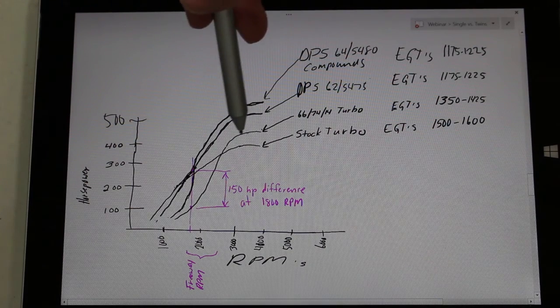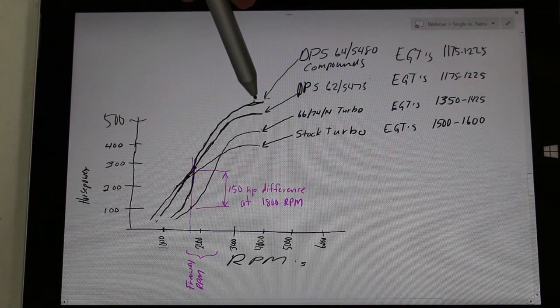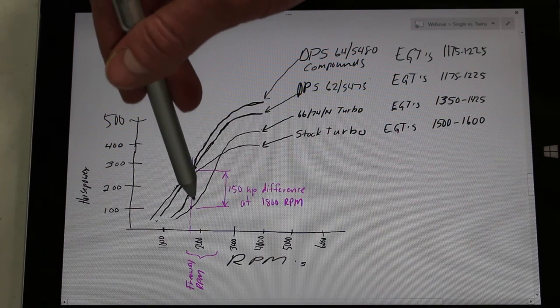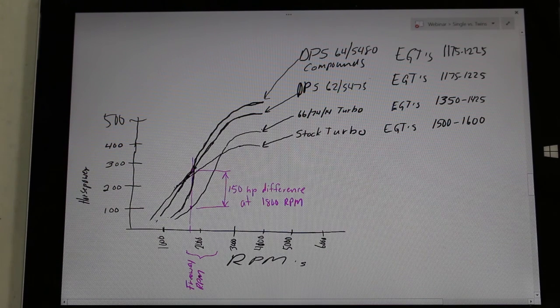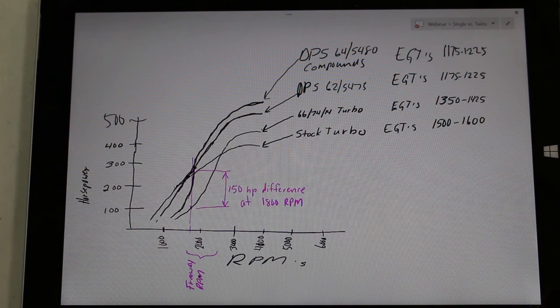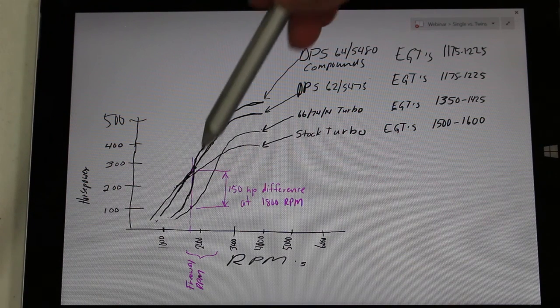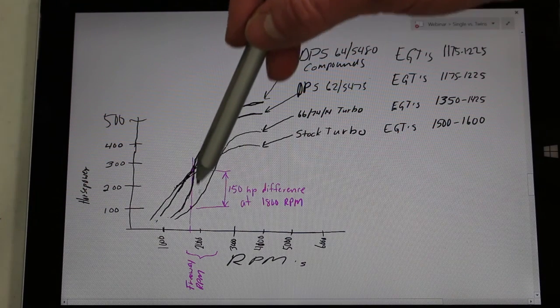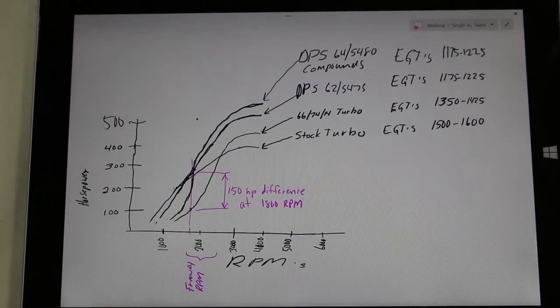So look at the difference in horsepower between any one of our kits at 1800 RPMs. Because 1800 RPMs in that realm is where you're going to be driving on the freeway. At those usable, really usable RPM levels are literally going to monkey stomp those huge 66 type turbos that people are running. And I think this graph pretty much speaks for itself. So let's go to, let's go to a question.